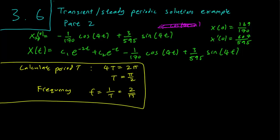We have our initial conditions x and x prime. Our first order of business is to calculate x prime. x prime is just going to be minus 2c1 e^(-2t) minus c2 e^(-t) plus 4/170 sin(4t) plus 12/595 cos(4t).